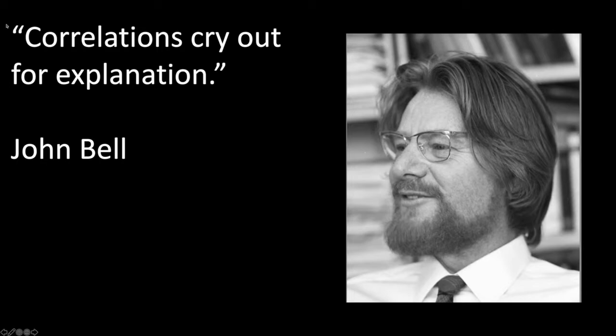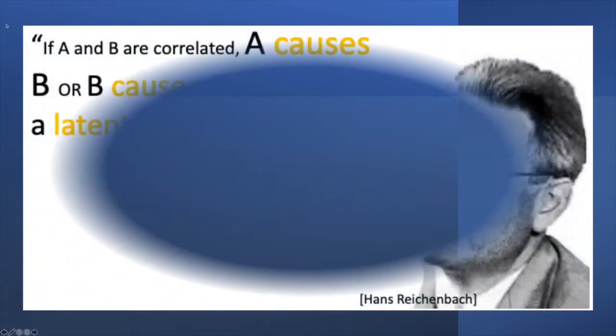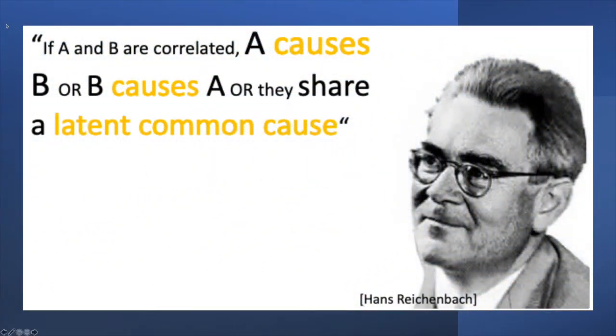As John Bell famously said, correlations cry out for explanation, and most people expect explanation to involve causal relations of some sort. That is, per Reichenbach's Principle, if A and B are correlated, A causes B, or B causes A, or they share a latent common cause.